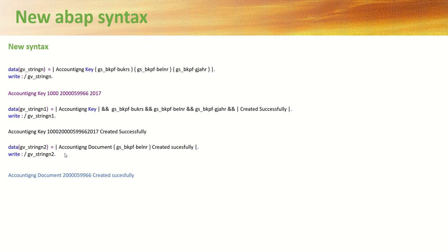Suppose I don't have multiple variables — only a single variable — but I also want to avoid the ampersand. We can write first a text element, then a variable, and then again a text element into a new string. This is how we do the concatenate with the new syntax. So let's create one small program for this.